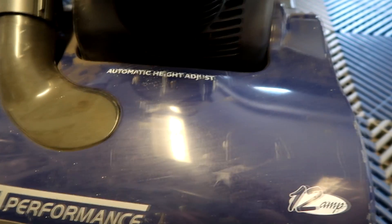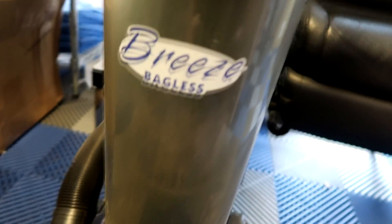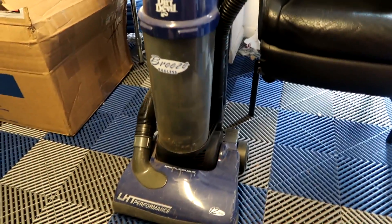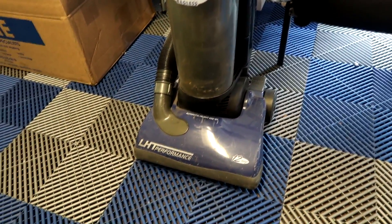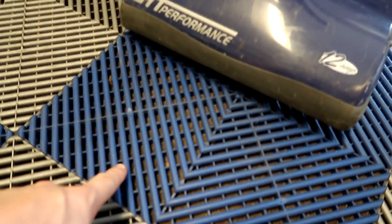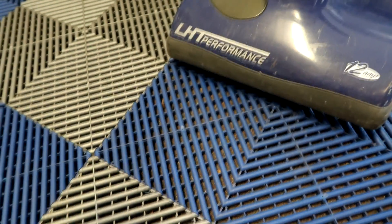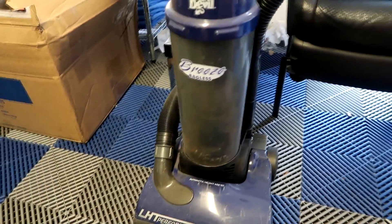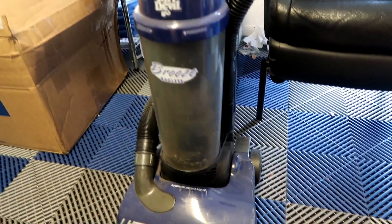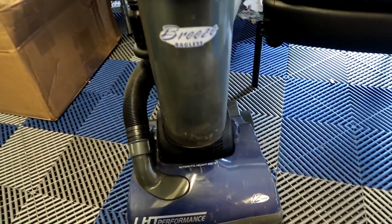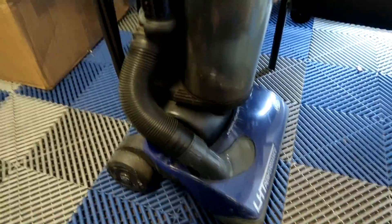It's a 12 amp, automatic height adjust, bagless. That's gotta be good. 29 bucks. I bought it, brought it back to the shop, vacuumed the carpet which is still under the Swiss tracks. It's like that weird blue indoor outdoor carpet. It did a great job. I was so impressed I went back and bought another one and gave it to my wife because our first vacuum didn't really do a very good job. In fact, some could say it sucked.